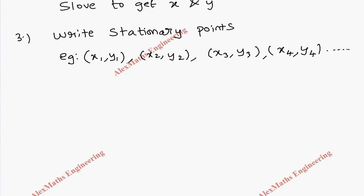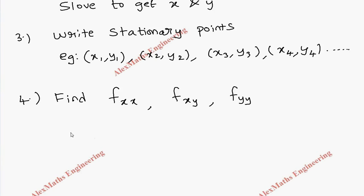After writing the stationary points, we have to find the second derivatives: fxx, which is the partial differentiation of fx with respect to x; fxy, which is the partial differentiation of fy with respect to x; and fyy. We name these as capital A = fxx, capital B = fxy, and capital C = fyy.